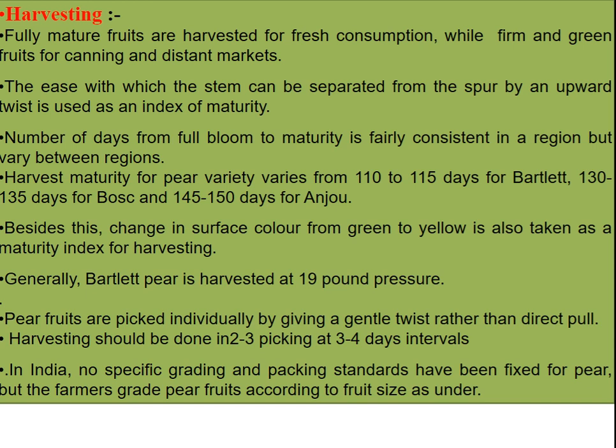Fully mature fruits are harvested for fresh consumption while foam and green fruits are used for canning and distant markets. The ease with which the stem can be separated from the spur by an upward twist is used as an index of maturity. Harvest maturity for pear varieties varies: 110 to 115 days for Bartlett, 130 to 135 days for Bosc, and 145 to 150 days for Anjou. Change in surface color from green to yellow is also taken as a maturity index. Bartlett pear is harvested at 19 pounds pressure. Fruits are picked individually by giving a gentle twist and harvesting is done in two to three pickings at three to four day intervals.